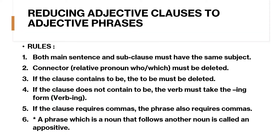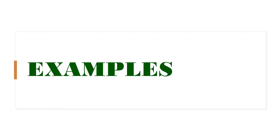Reducing adjective clauses to adjective phrases — please pay attention to the rules. Rule 1: both the main sentence and subclause must have the same subject. Rule 2: the connector or relative pronoun 'who' or 'which' must be deleted. Rule 3: if the clause contains 'to be,' the 'to be' must be deleted. Rule 4: if the clause does not contain 'to be,' the verb must take the -ing form. Rule 5: if the clause requires commas, the phrase also requires commas. Note: a phrase which is a noun that follows another noun is called an appositive.